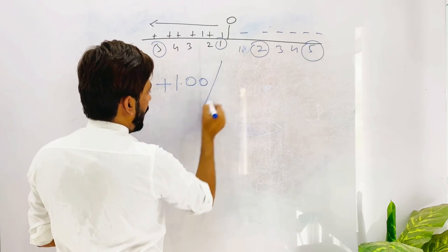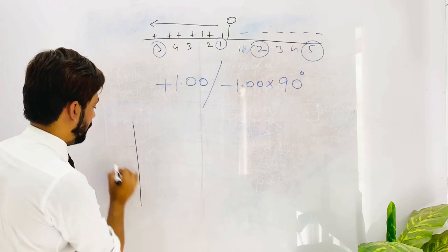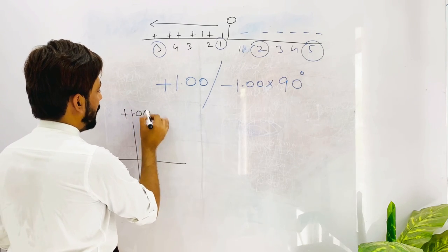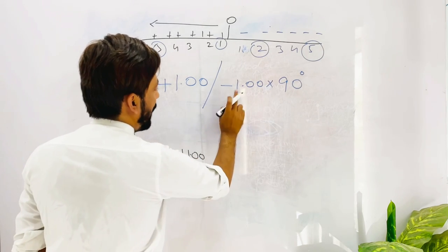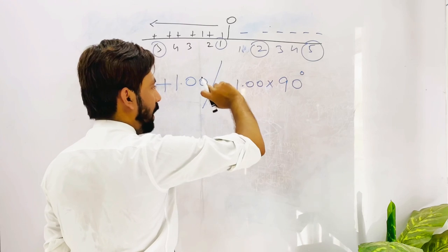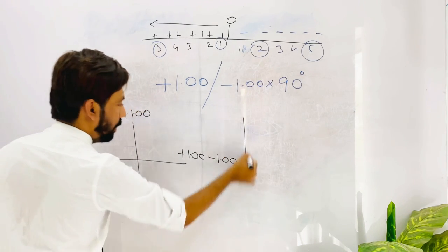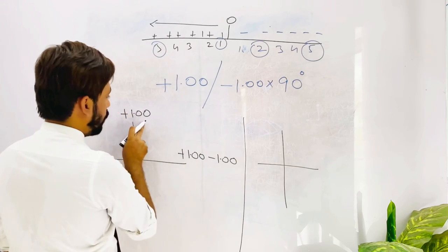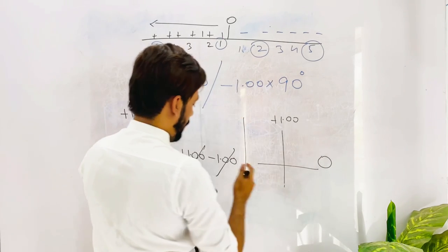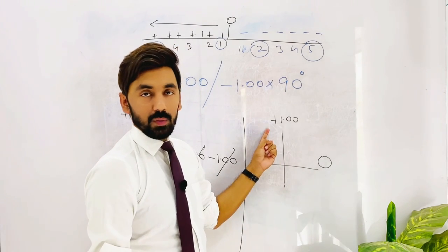Let's take another example: plus one sphere with minus one cylinder at 90 degrees. Plus one spherical is present at both the 90 and 180-degree meridians. The cylinder axis is at 90 degrees, so the cylinder power is at 180 degrees. At 180 degrees: plus one sphere plus minus one cylinder equals zero. At 90 degrees: plus one remains. So we have plus one at 90 degrees and zero at 180 degrees.